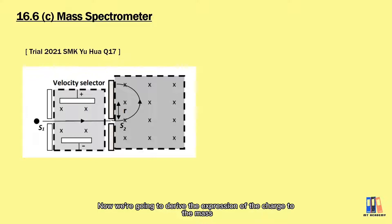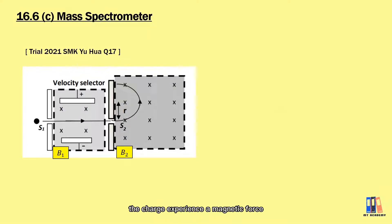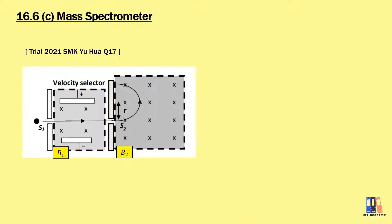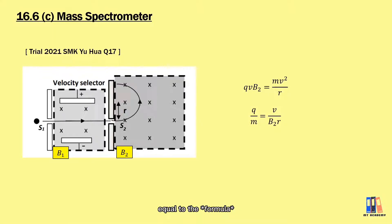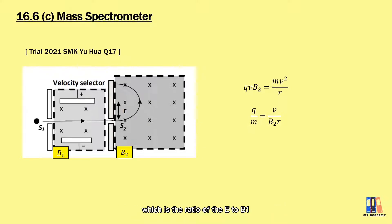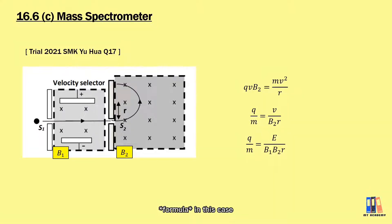Now we're going to derive the expression for the charge-to-mass ratio. When the charge passing through the velocity selector enters a second region, the charge experiences a magnetic force which is also the centripetal force, causing it to move in circular motion. Substituting the formula, we have qvB equal to mv² over r. Rearranging, we obtain the charge-to-mass ratio equal to v divided by B₂r. We can also substitute the velocity as the ratio of E to B₁, giving a different expression: charge-to-mass equal to E divided by B₁B₂r.